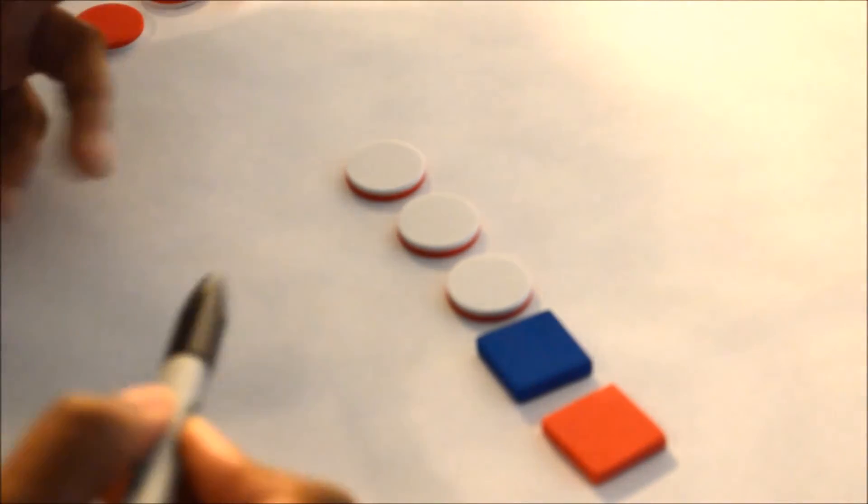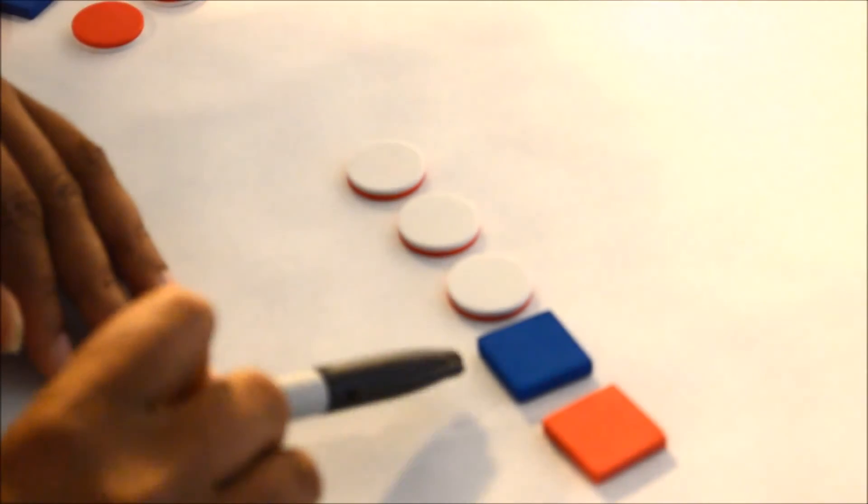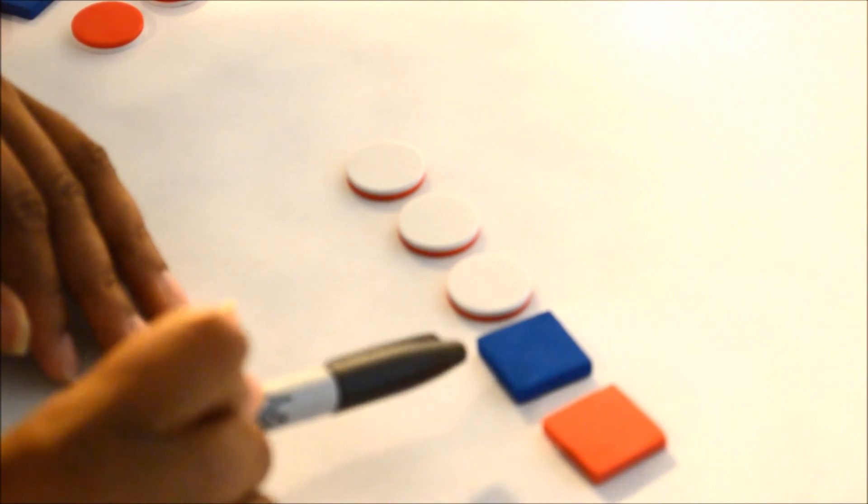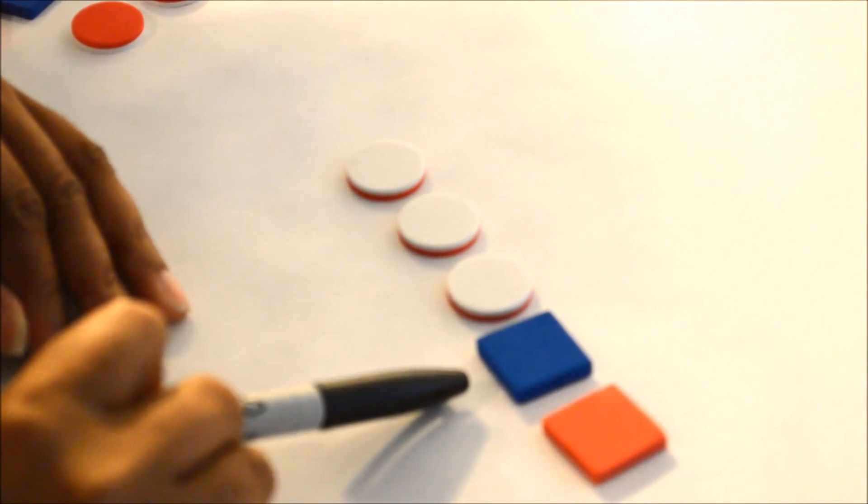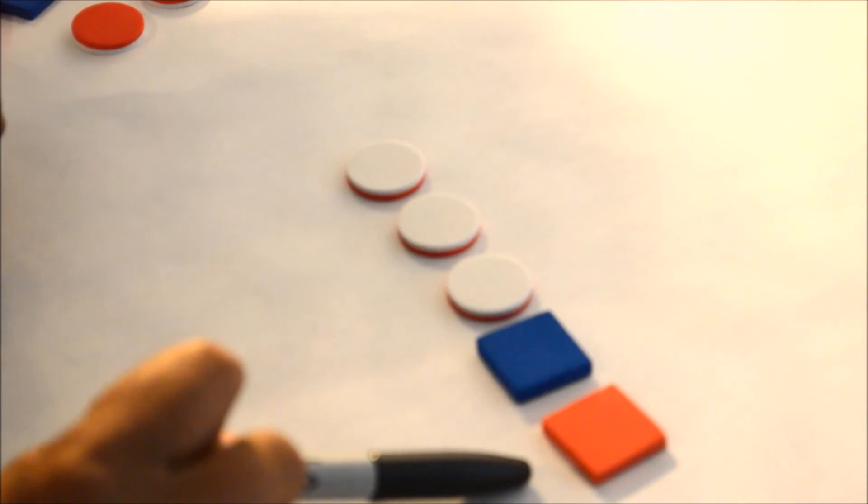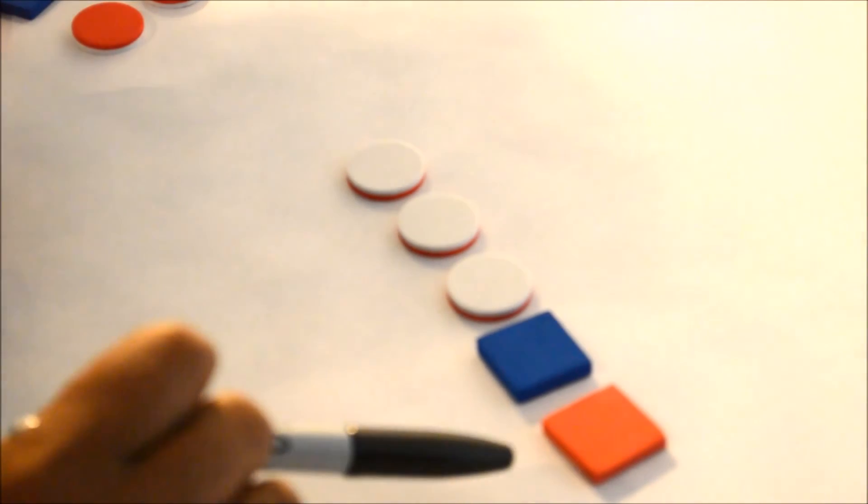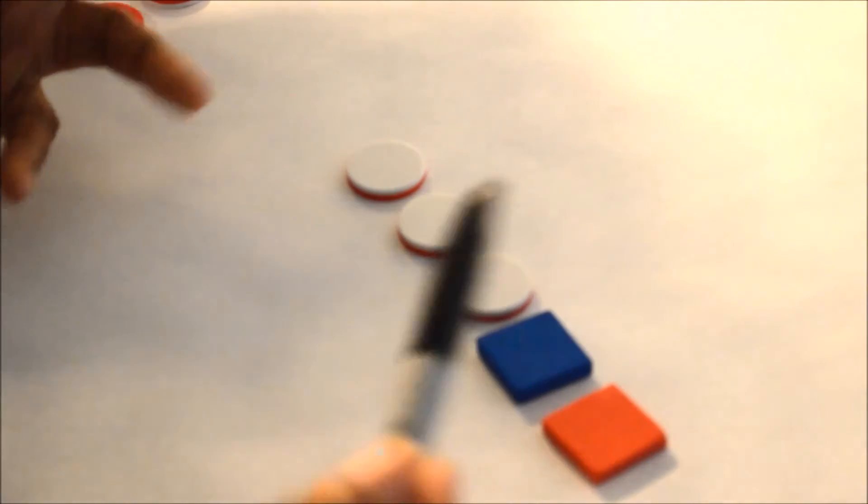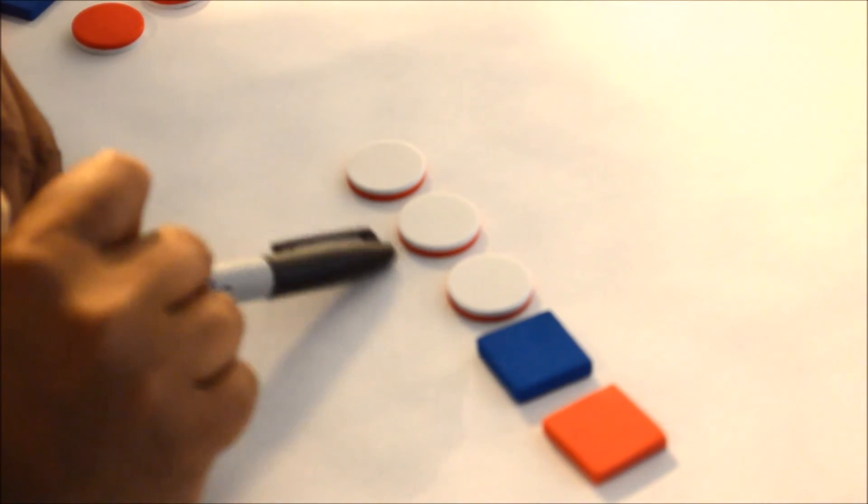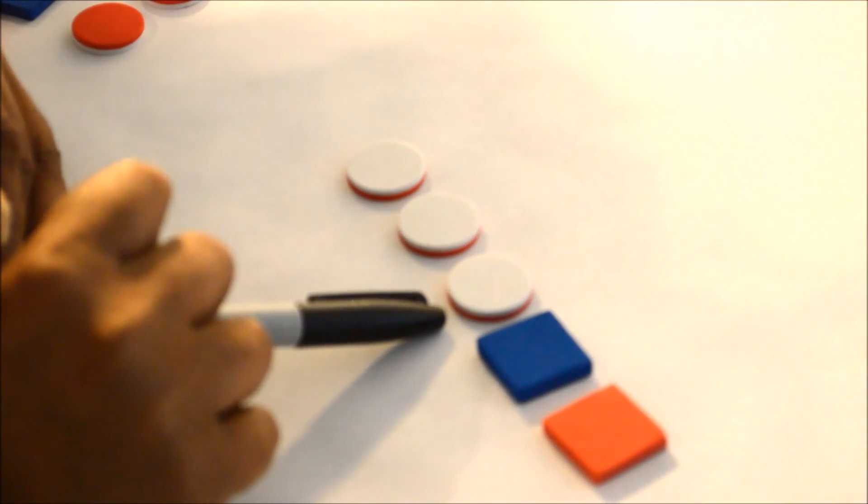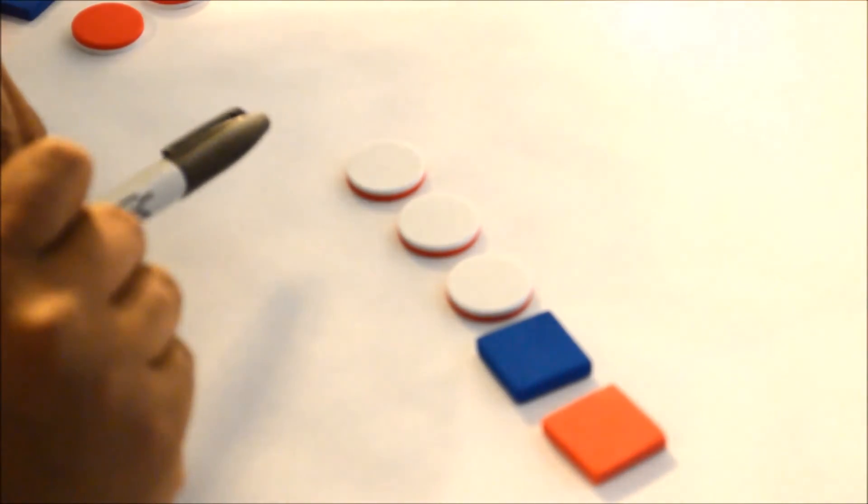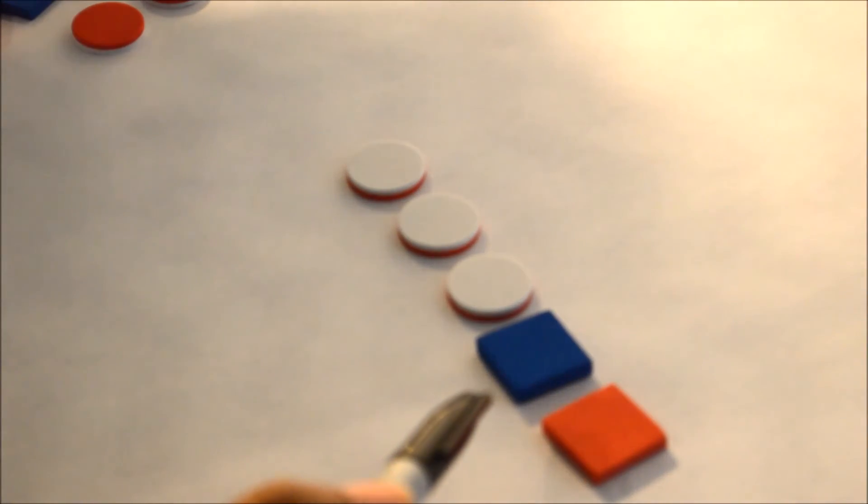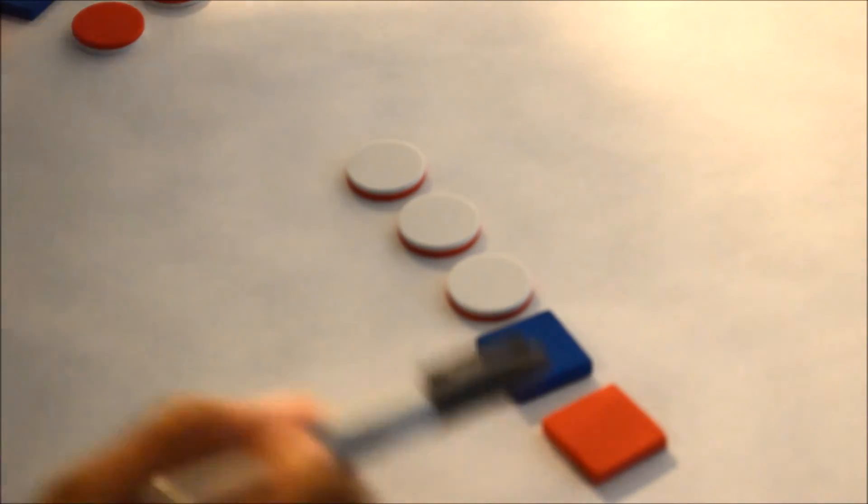Another question that you could ask: what fractional part of the set is blue? One fifth is blue. What fractional part of the set is red? One fifth is red. And also another question: what fractional part of the set are not two-colored counters? Two fifths. It's just different ways to get the kids to think about fractions.